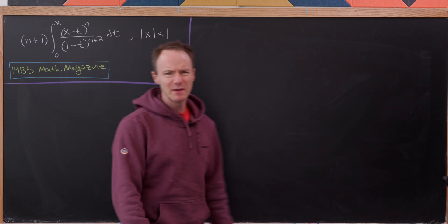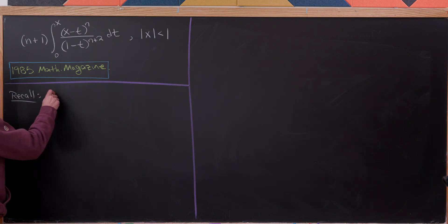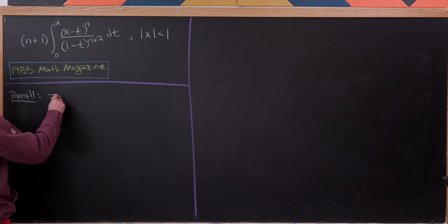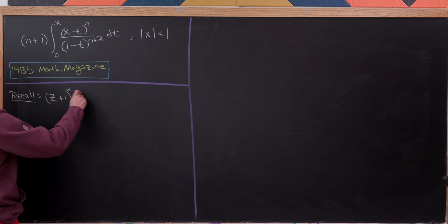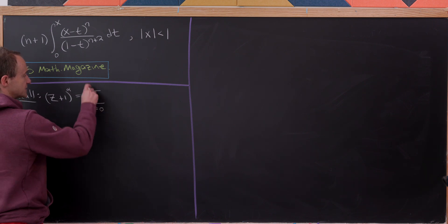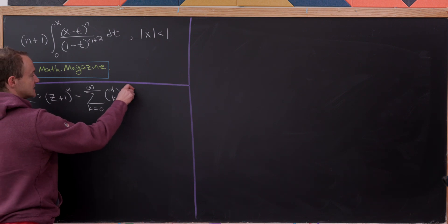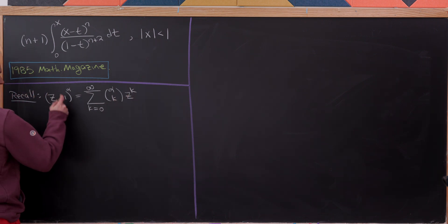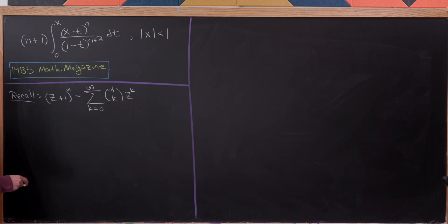Let's recall how that expansion goes. If we have z plus 1 raised to the alpha power, that equals the sum as k goes from 0 to infinity of alpha choose k times z to the k. Alpha here can be any complex number.